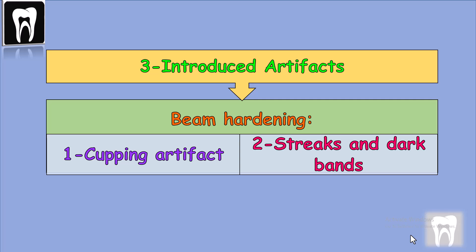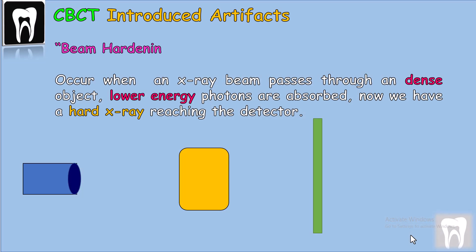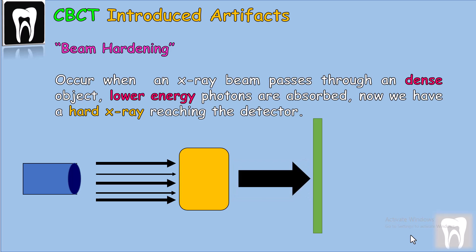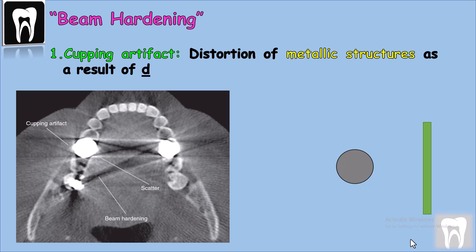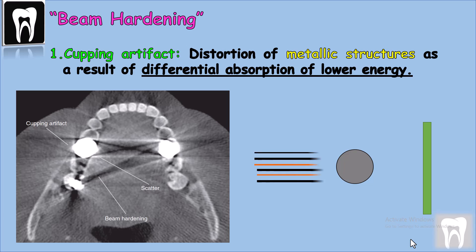Introduced artifacts include the beam hardening artifact, which has two categories: cupping artifact, and streak and dark bands. Beam hardening occurs when the x-ray beam passes through a dense object like a crown restoration — lower energy photons are absorbed but higher energy photons pass through, so the mean energy increases and the beam becomes harder. Cupping artifact is a distortion in the image of metallic structures: x-rays passing through the mid-portion of the object are hardened more than those passing through the edges, because soft x-ray photons are absorbed more, causing visible distortion.